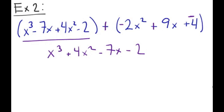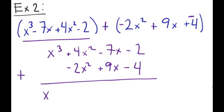Then we're going to go down. We don't have any x cubed terms, but we do have a negative 2x squared. We have a positive 9x, and we have a negative 4. x cubed just carries down because there's nothing to combine it with. 4x squared minus 2x squared is going to give you positive 2x squared. Negative 7x plus 9x is positive 2x. And negative 2 minus 4 gives you negative 6.